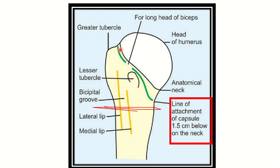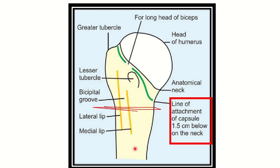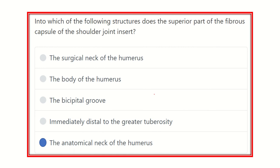The surgical and anatomical neck — the capsule is very close to the anatomical neck. So our final answer is the anatomical neck of the humerus. Along this line is the anatomical neck, and here is the ligament or fibrous attachment.